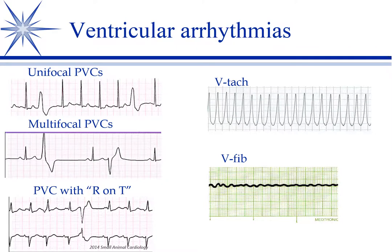Atrial or supraventricular tachycardia is concerning, but we really get concerned about ventricular tachyarrhythmias. There, the atria are no longer controlling the QRS complex — you've got a foci in the ventricle firing instead. Normally, the AV node carries the impulse down to the tip of the heart and then it spreads upward for a coordinated contraction. When the impulse occurs in the middle of the myocardium, you don't get that coordination. Here are some PVCs — premature ventricular contractions, also called VPCs.